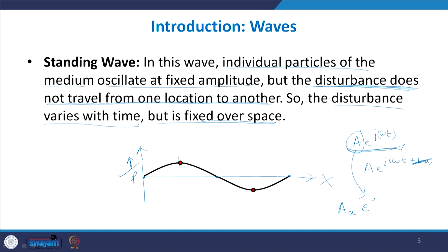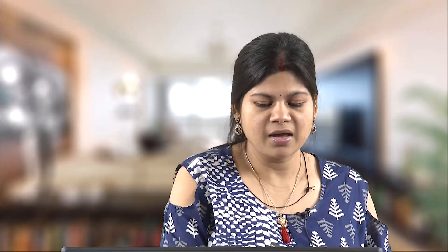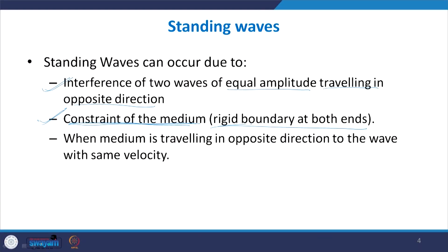A general equation for a standing wave can be written as A(x) · e^(jωt), where A is some function of space. Now, how are such waves created? There are many phenomena where standing waves occur. The first is when two waves of equal amplitude travelling in opposite directions interfere with each other. The second is when we have waves generated in a confined medium bounded by rigid boundaries — a constraint medium. The third is when the medium itself travels opposite to the wave with the same velocity.